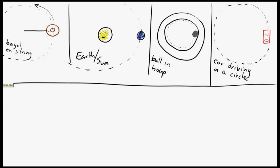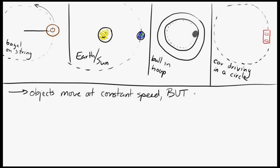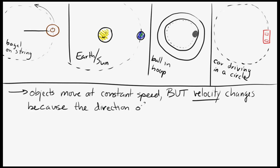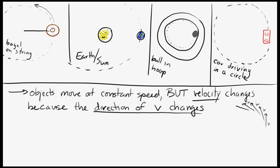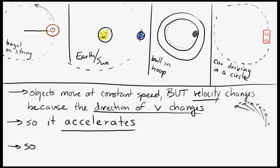In every case, the object is not speeding up and is not slowing down, but it is changing its velocity. The reason is that velocity is a vector — it has a direction. So even though each object isn't speeding up or slowing down, it is changing its direction during that motion. If it's changing the direction it's traveling, then it's changing its velocity. So if the velocity is changing, that means it has to be accelerating. And if it's accelerating, then according to Newton's second law, there has to be a net force on the object.